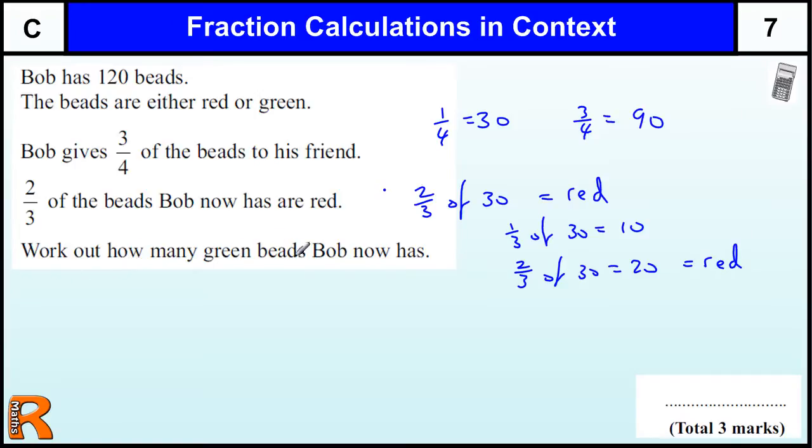Work out how many green beads Bob now has. Well, if they are either red or green, and the 20 are red, that means 10 are green.